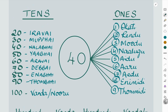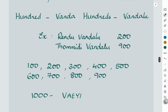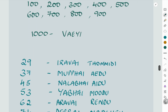For 'okavanda' you need not say 100 every time, you can just say 'vanda'. Then: 'rendu vandalu' (200), 'moodu vandalu' (300), 'nalugu vandalu' (400), 'aidu vandalu' (500), 'aaru vandalu' (600), 'eidu vandalu' (700), 'enimidi vandalu' (800), 'tummidi vandalu' (900). Ten hundreds would be 'veyi' — one thousand.